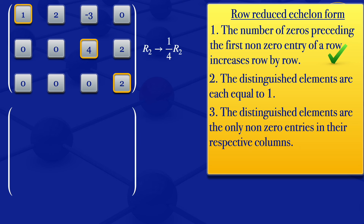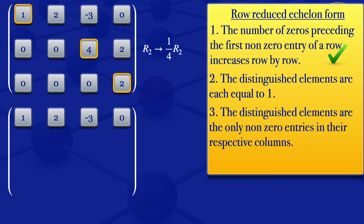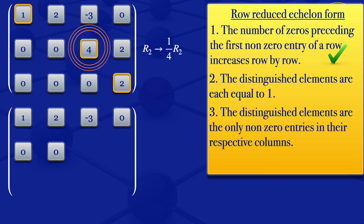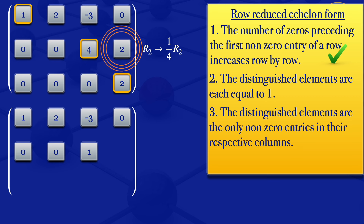So I would have another matrix there. The elements in row one I'm not changing, so we have 1, 2, -3, 0. Then we are dividing each element in row two by four: zero divided by four gives zero; zero divided by four gives zero; four divided by four gives one; two divided by four gives one over two.